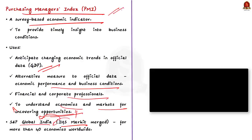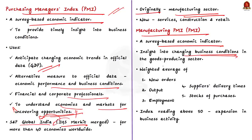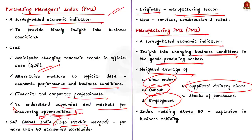Manufacturing PMI is a survey-based economic indicator providing timely insight into changing business conditions in the goods-producing sector. It is a weighted average of five indices: new orders, output, employment, suppliers' delivery times, and inventories or stocks of goods purchased. New orders refers to the level of new orders received this month compared to one month ago, calculated in units (not money), including domestic and export orders. Suppliers' delivery times is the average length of time agreed to deliver goods this month compared to last month. Output is the volume of units provided this month compared to last month.